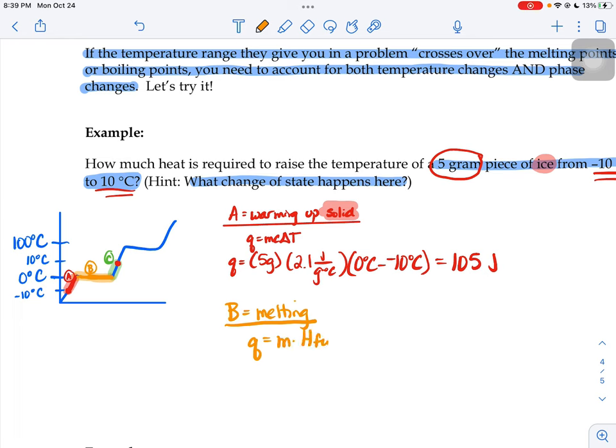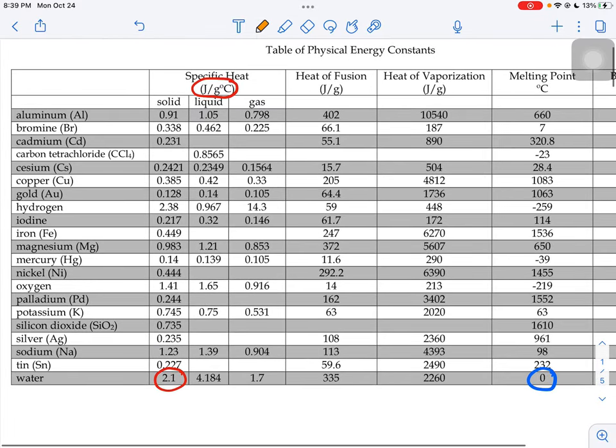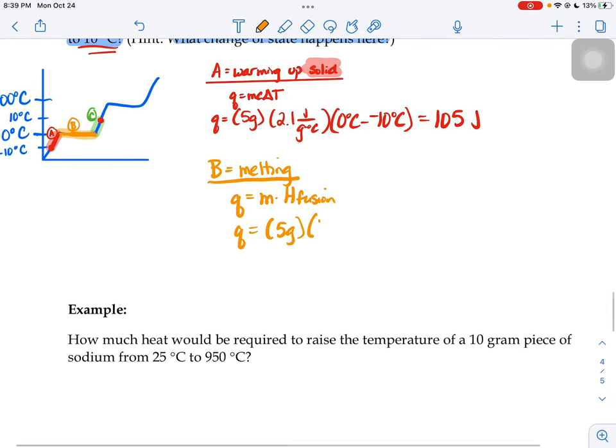When we melt, we're going to do mass times heat of fusion. Our ice is still five grams - the mass doesn't change. But now I need water's heat of fusion number. I go to my chart and look up water's heat of fusion number. Here it is, this 335 joules per gram. Put that number into my equation. Five times 335 gives you 1675 joules.